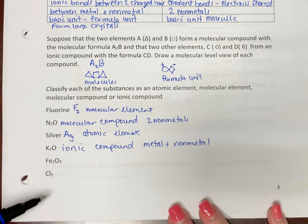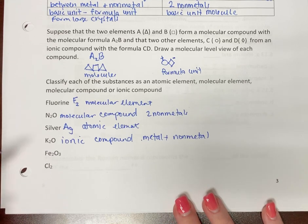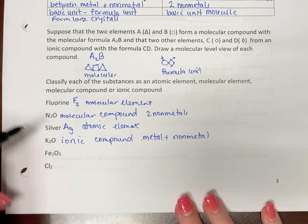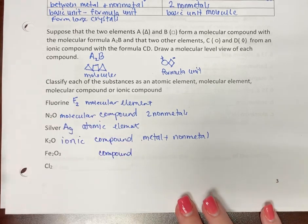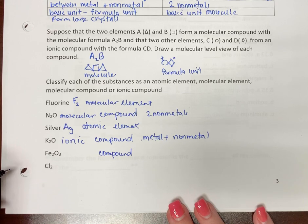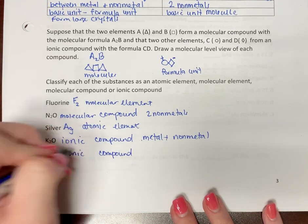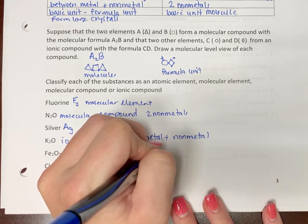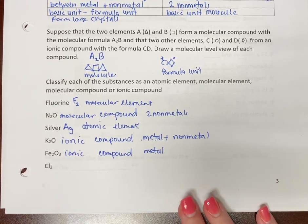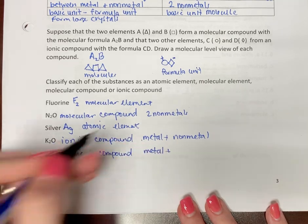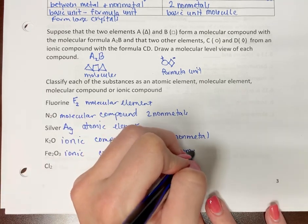Iron 3 oxide. Is it an element or is it a compound? It's a compound. Is it ionic or molecular? This would also be ionic because iron is a metal. Just look on your periodic table. Find the big stairs. To the left of the stairs, metal. Right of the stairs, nonmetal. Oxygen still is a nonmetal.